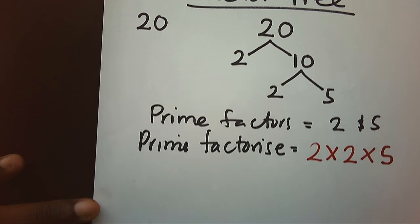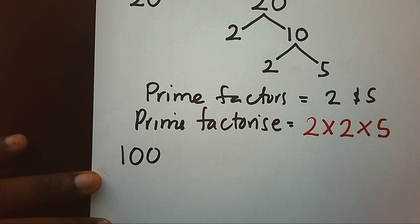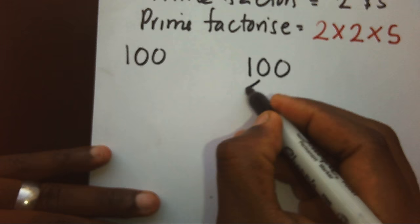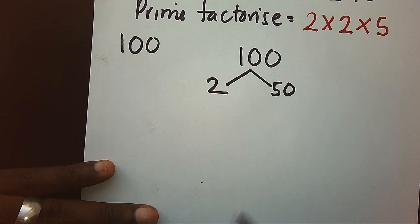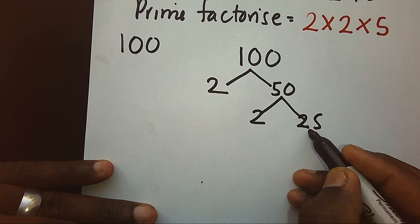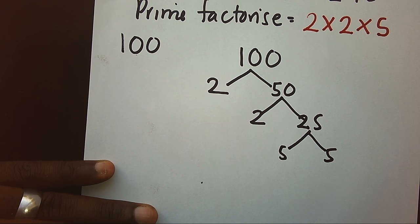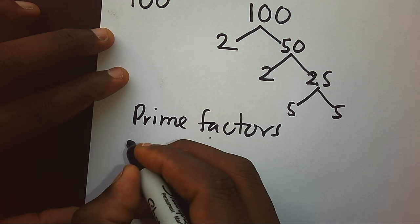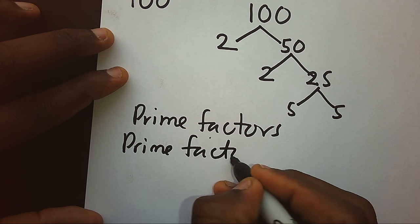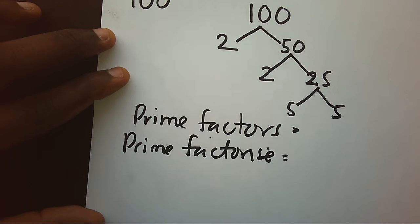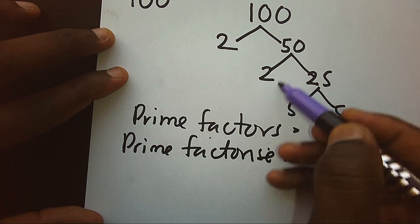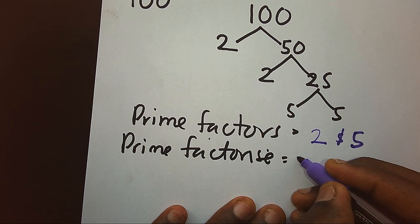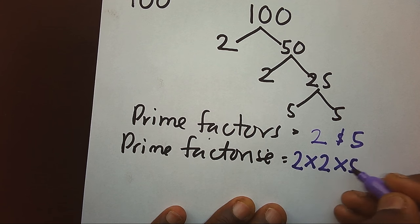Let's look at another example with 100. Writing the factor tree of 100: divide by 2 to get 50, divide by 2 to get 25, divide by 5 to get 5. From this, the prime factors are 2 and 5. If we prime factorize, we get 2 times 2 times 5 times 5.